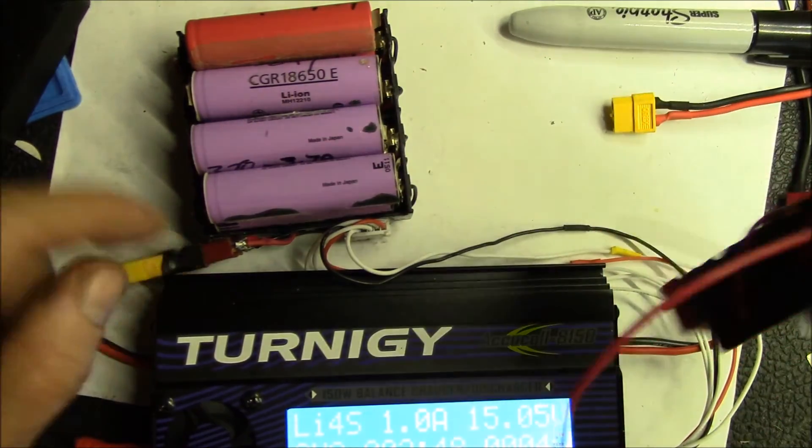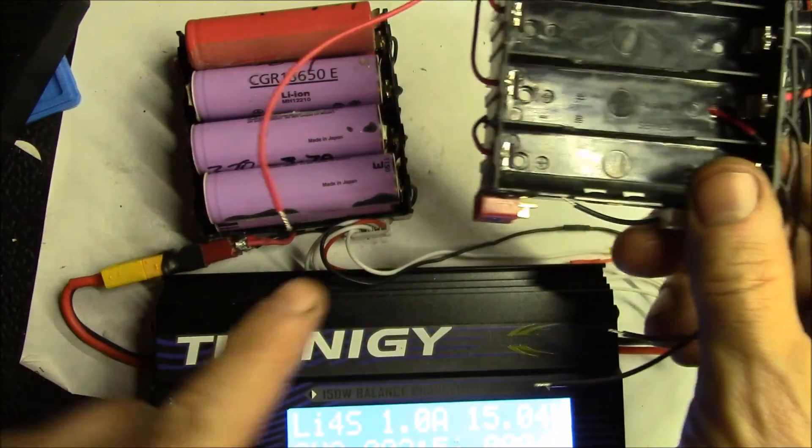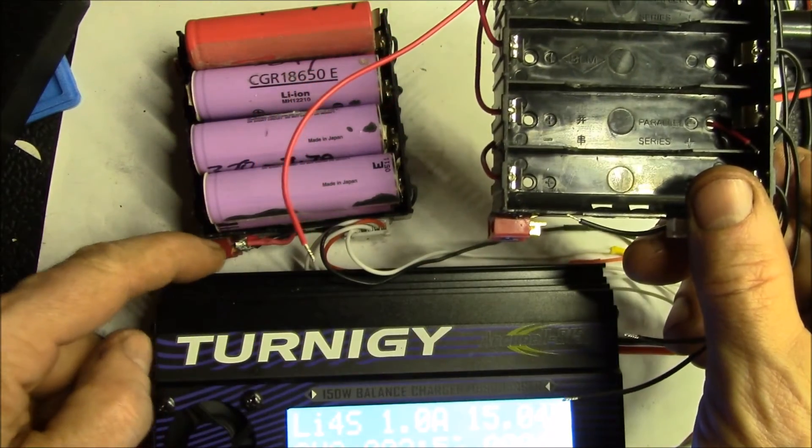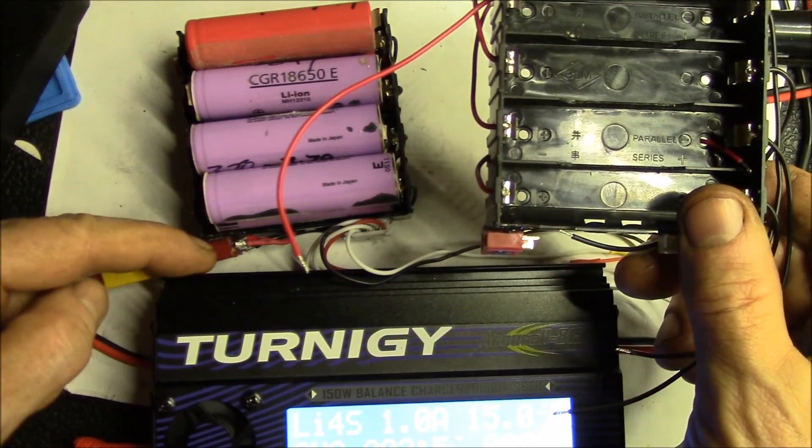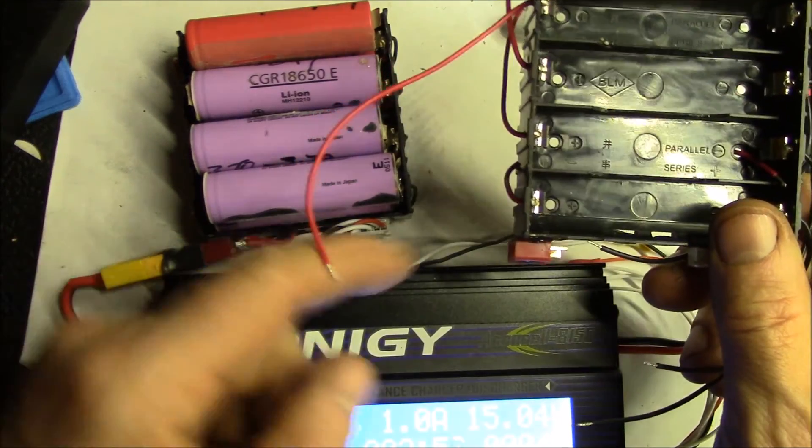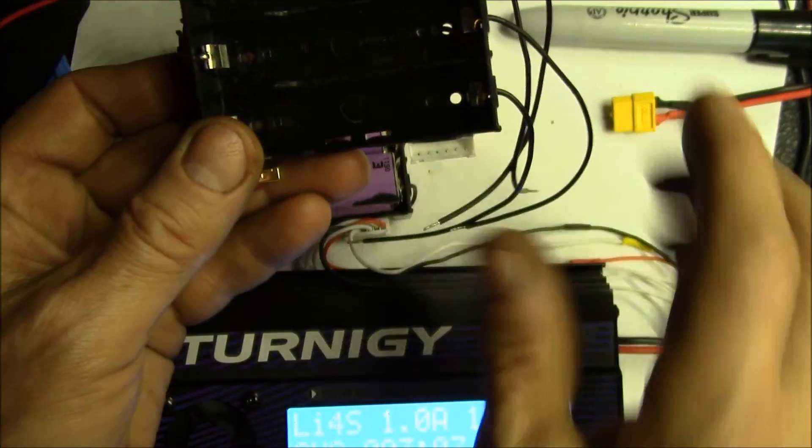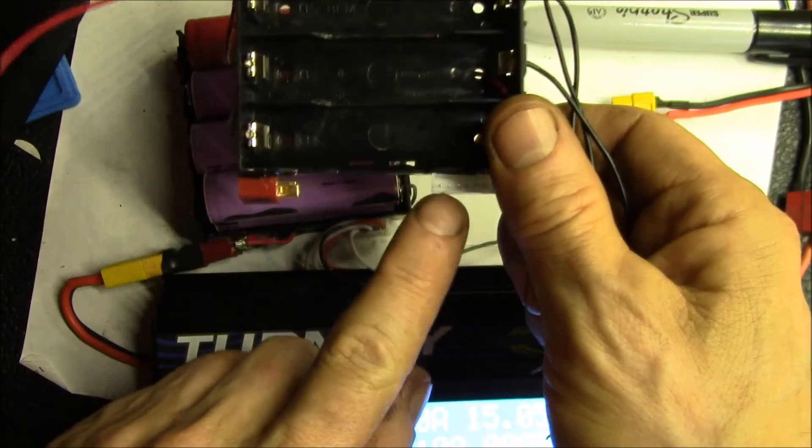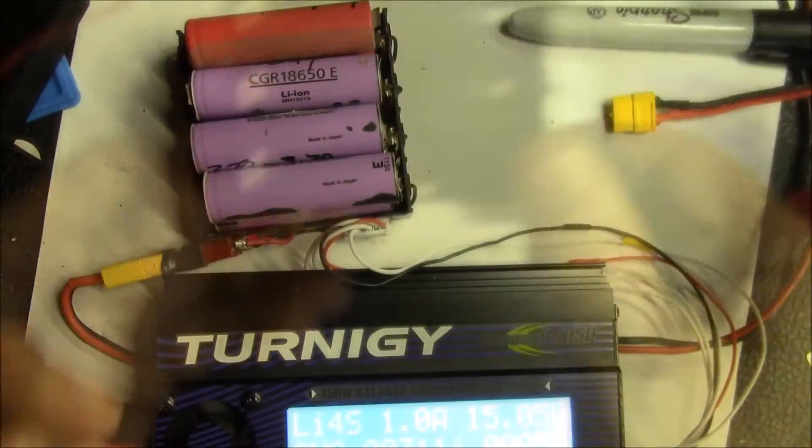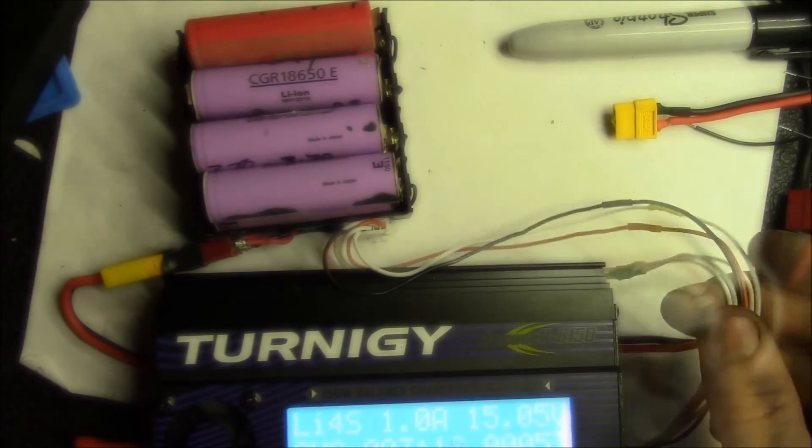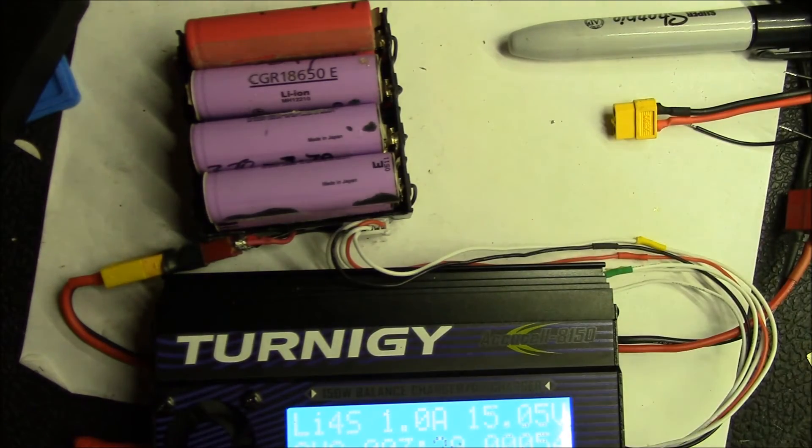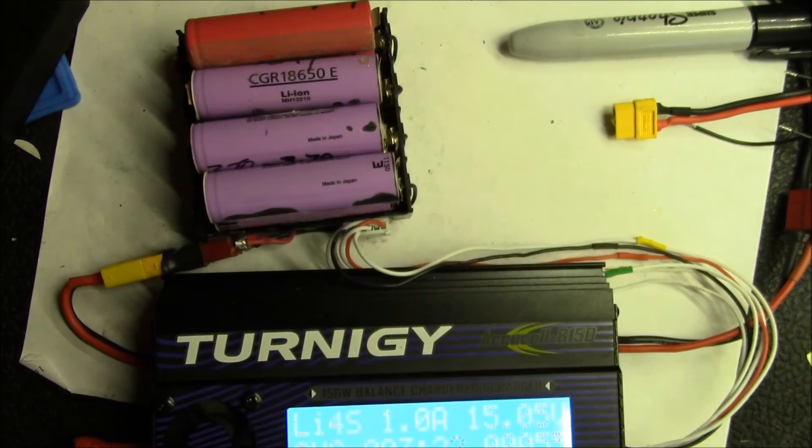I have the, if you turn it around like this, I've got the Dean's plug down here feeding power, the charging output. Then I've got my six pin JST connector. I'm only using five of the pins for a 4S. Also using a 5S balance cable. But if you only hook up the first four, it's a 4S cable.